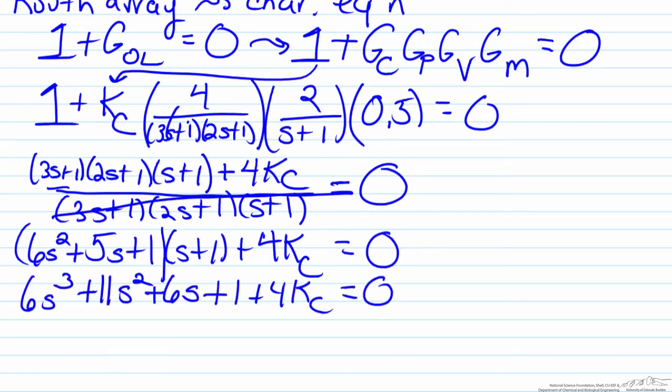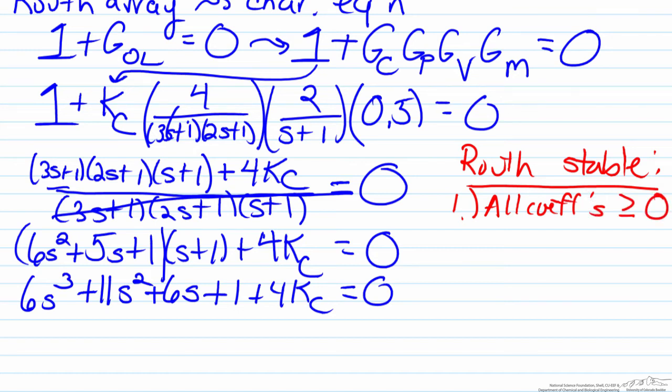Now we have this set up all ready to be analyzed in the Routh array. For a Routh array, for the process to be stable we need to have two things happen: all coefficients must be greater than or equal to zero, and all terms in the first column of the array must be positive.